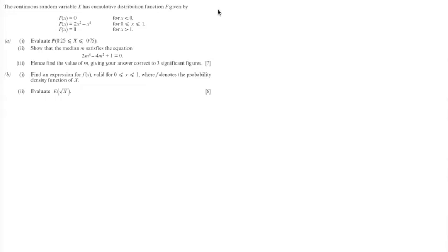This random variable X has the cumulative distribution function F given by F(X) equals 0 for X less than 0, F(X) equals 2X squared minus X to the power of 4 for X between 0 and 1, and F(X) equals 1 for X greater than 1.